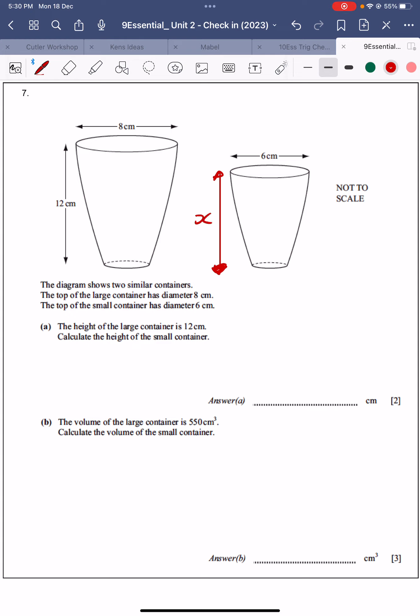We can do the ratio method, and so x is what we're trying to find. x as a ratio to 12 has to match with the 6 as a ratio to 8. And then when we solve this, this is 6 times 12 divided by 8, and so that will be 9 centimetres.